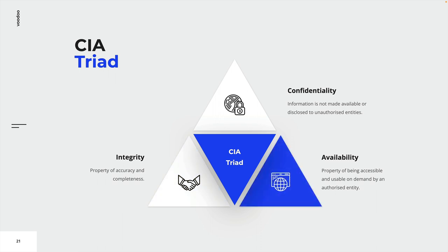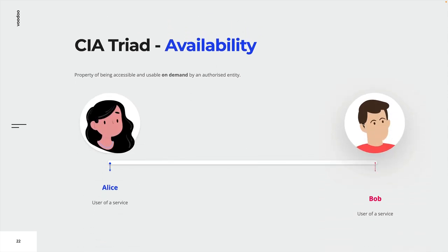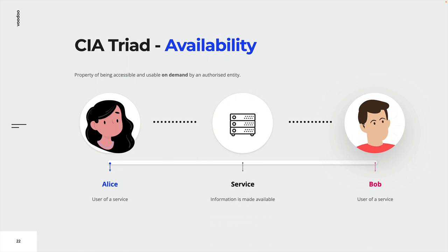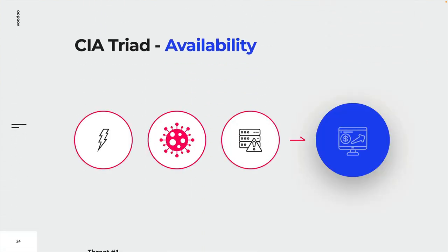Last but not least, availability as the third security objective is the property of being accessible and usable on demand by an authorized entity. Information is usually stored on central database systems and made available via network technology. Alice and Bob are enjoying the flexibility and convenience of services provided via the internet, such as the online banking service of their bank. Both rely on this service to pay their bills and secure their savings. If an attacker or any other threat is able to disrupt the provisioning of information, it can have serious consequences on organizations or society. Information has to be available when needed.